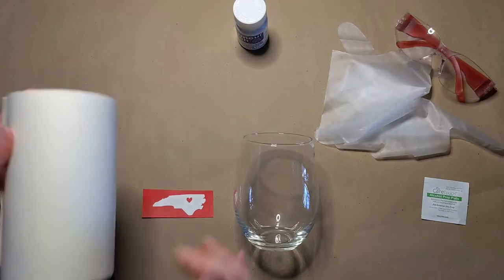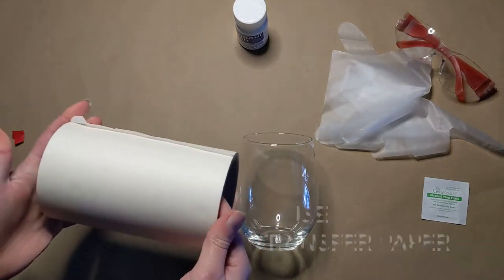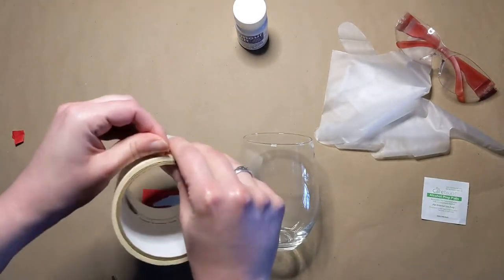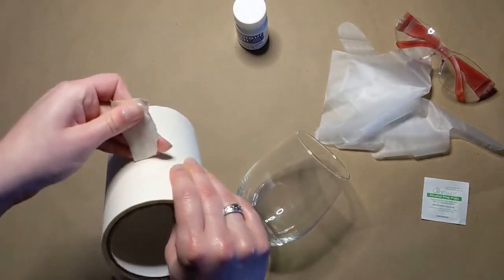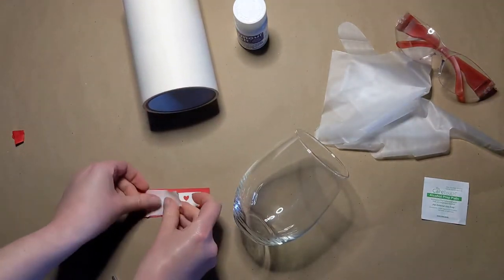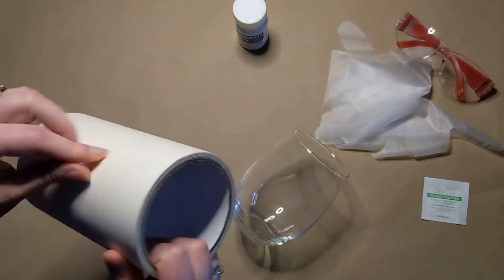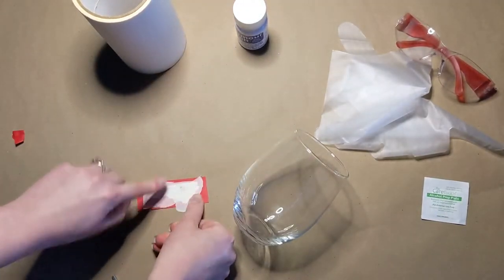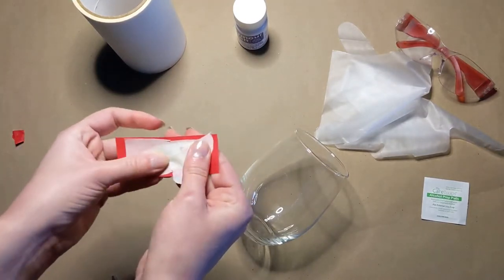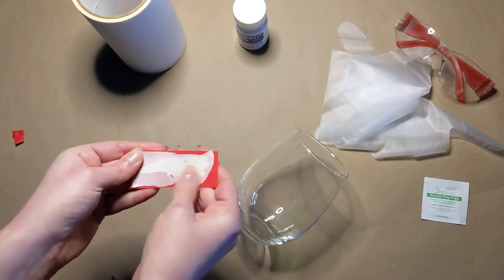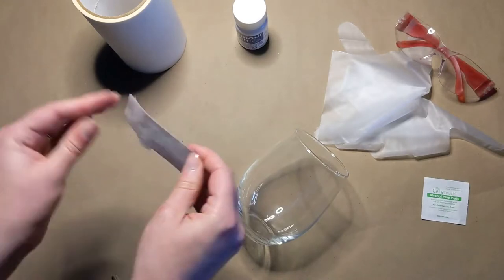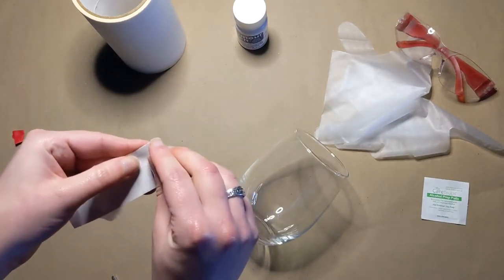The next step is we're going to use transfer paper, and the sole purpose of transfer paper is literally just to get the stencil from point A to point B. This does not have to be perfect. I mean, you can see, this doesn't look great. Again, its sole purpose is just so that the stencil will maintain its shape while you're transferring it from the stencil backing to the glass.